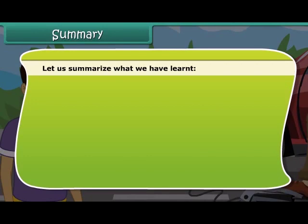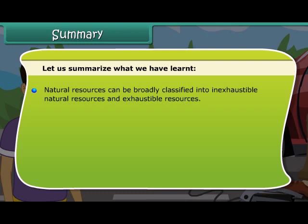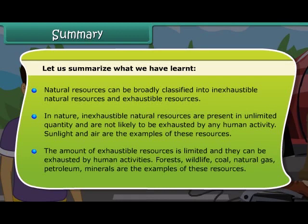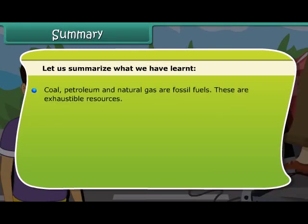Let us summarize what we have learned so far. Natural resources can be broadly classified into inexhaustible and exhaustible resources. Inexhaustible natural resources are present in unlimited quantity and are not likely to be exhausted by any human activity — sunlight and air are examples. The amount of exhaustible resources is limited and they can be exhausted by human activities. Forests, wildlife, coal, natural gas, petroleum and minerals are examples. Coal, petroleum and natural gas are known as fossil fuels and are exhaustible resources. Coke, coal tar and coal gas are all products of coal.